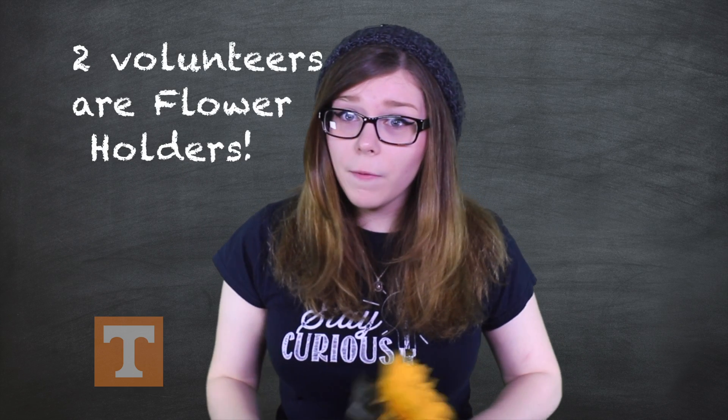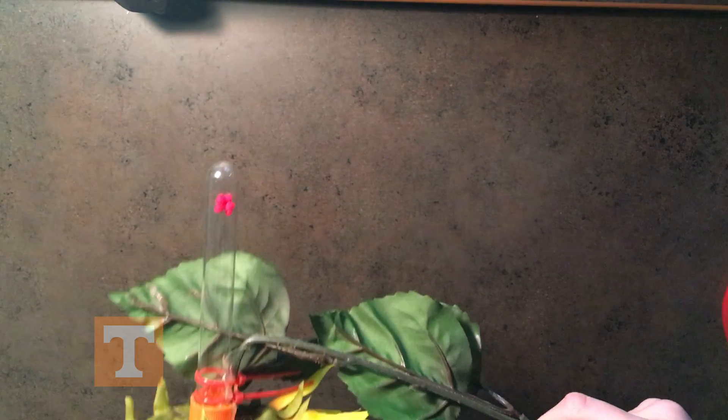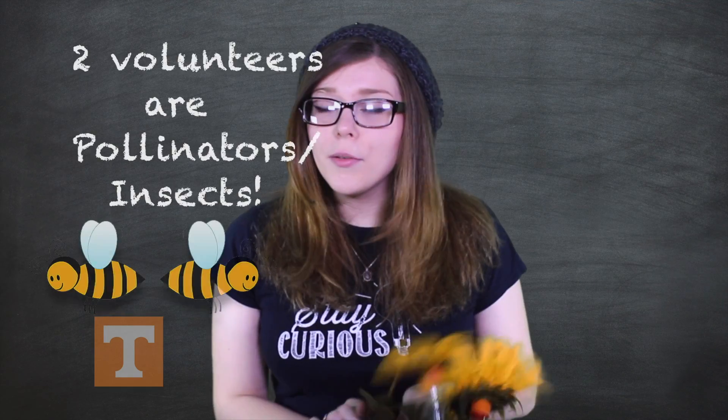We will need four volunteers from the class. Two of the four volunteers will be flower holders. They will hold the flower by the stem and wave it gently as if it were swaying in the breeze. As the flowers wave in the wind, it can make it difficult for bees to get down to the nectar.